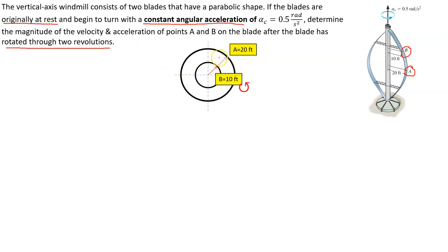I put this little free body diagram to demonstrate what this looks at. If you look at it from the top, this is the center. You've got point B at 10 feet, and here's point A at 20 feet. They have a common axis, a common rotation. So all of your angular parameters — displacement, velocity, and acceleration — are common. And that means our tangential parameters — tangential displacement, velocity, and tangential acceleration — are going to be based on the radius of where they take place. So you're going to have a different tangential velocity and acceleration at 10 feet than at 20 feet.